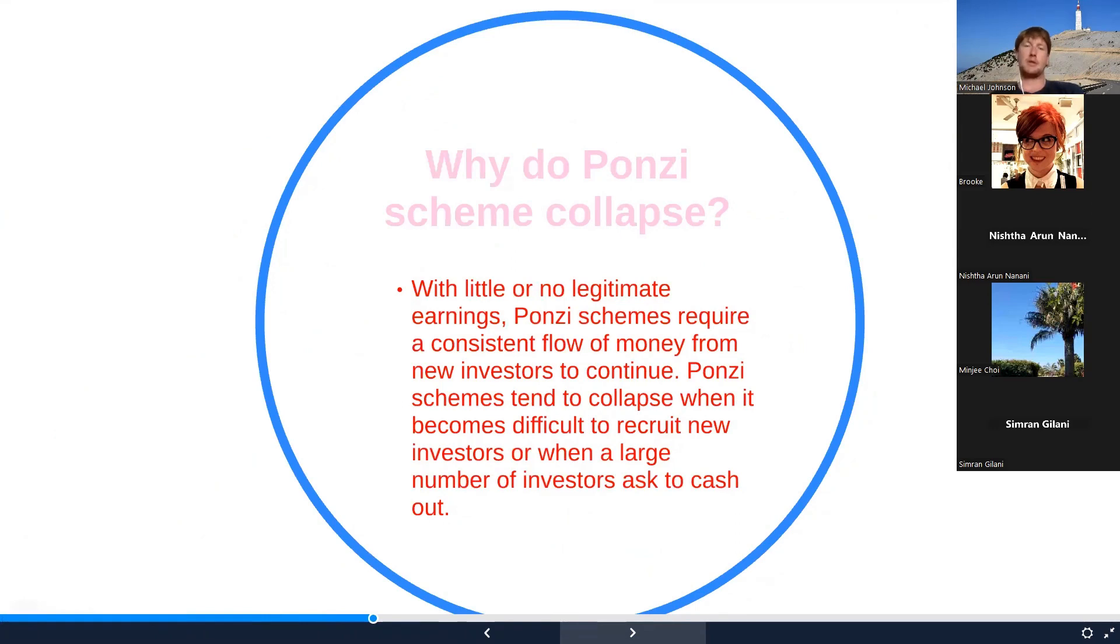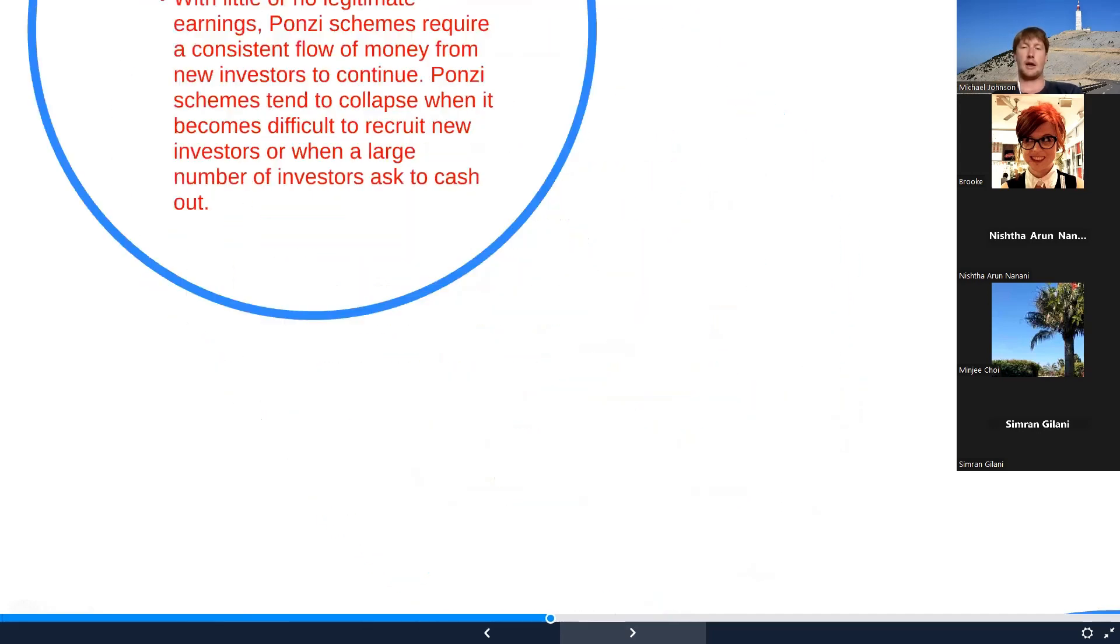Why do Ponzi schemes collapse? With little or no legitimate earnings, Ponzi schemes require a consistent flow of money from new investors to continue. Ponzi schemes tend to collapse when it becomes difficult to recruit new investors or when a large number of investors ask to cash out.